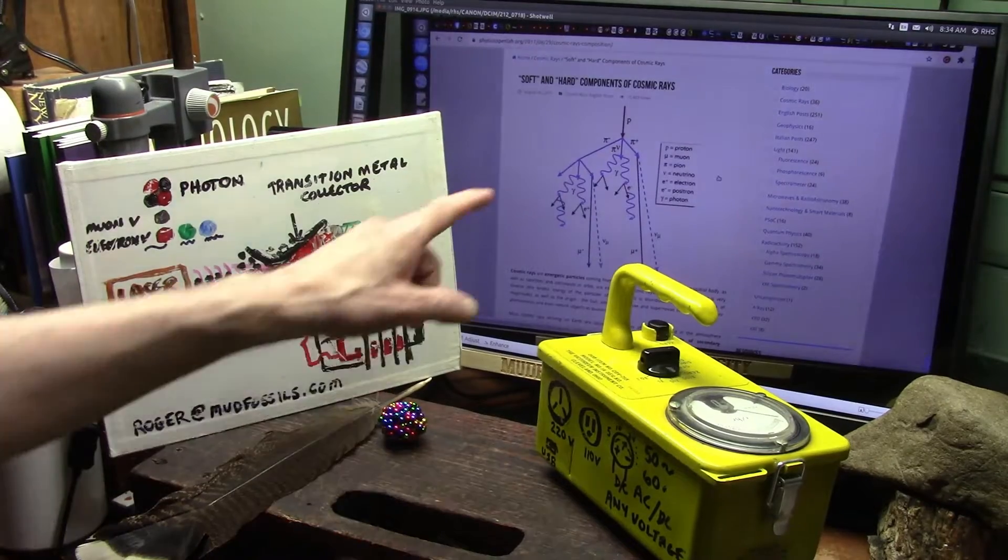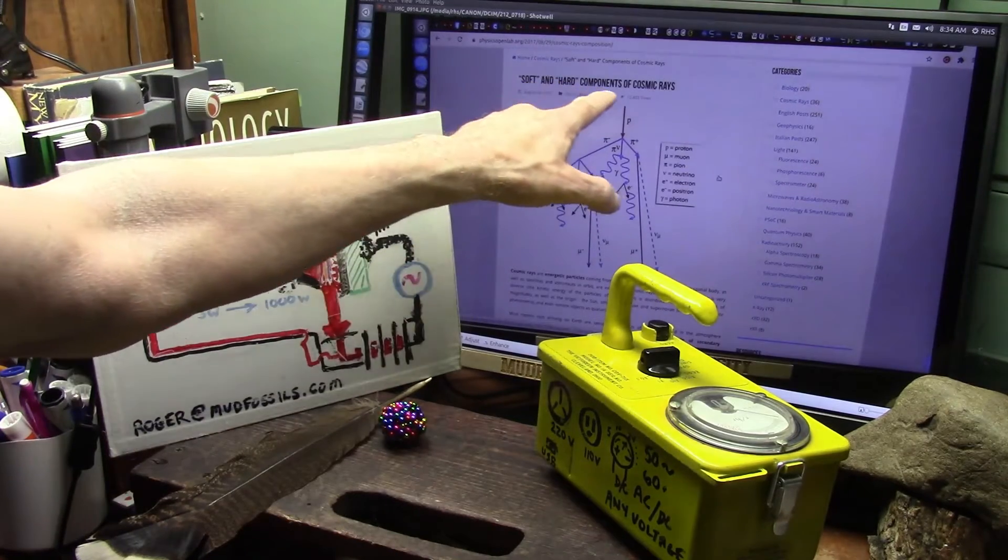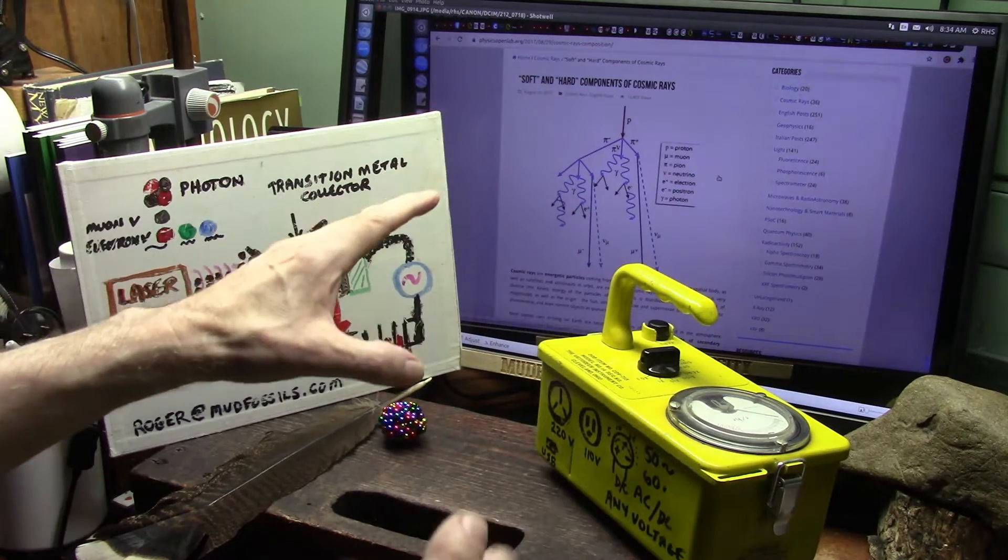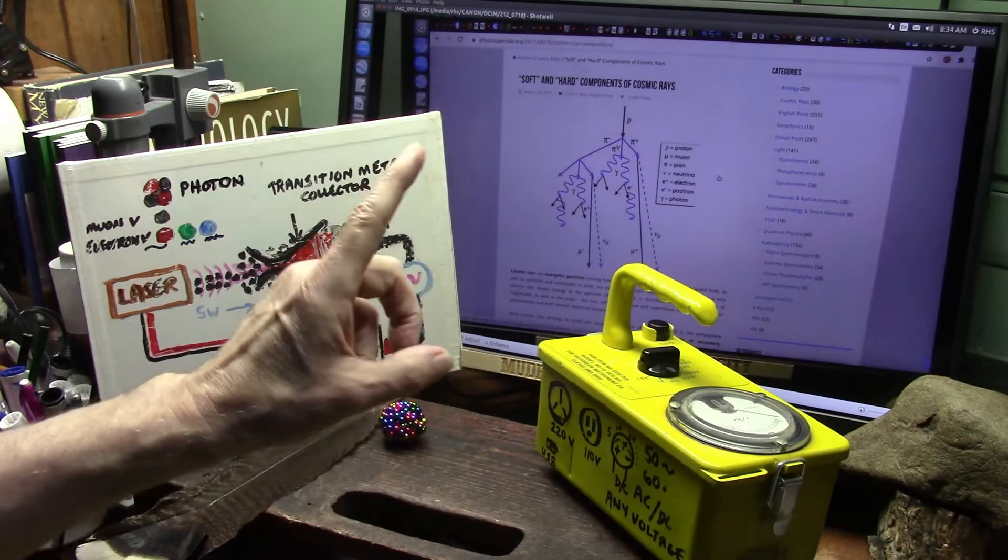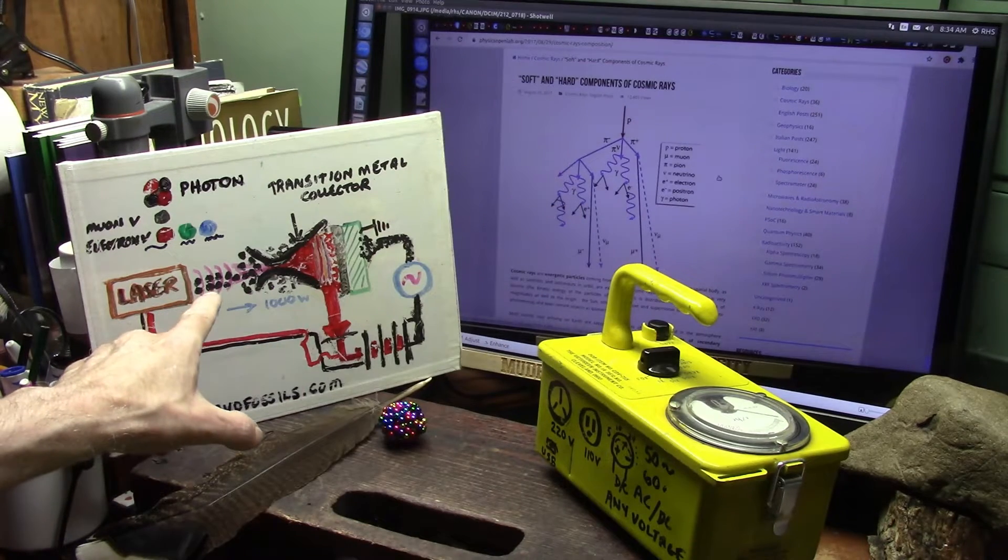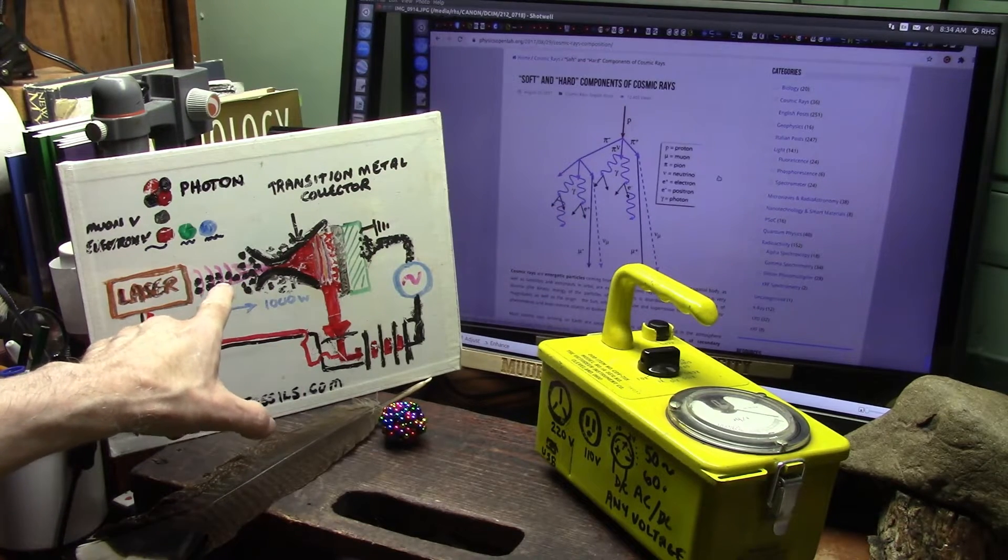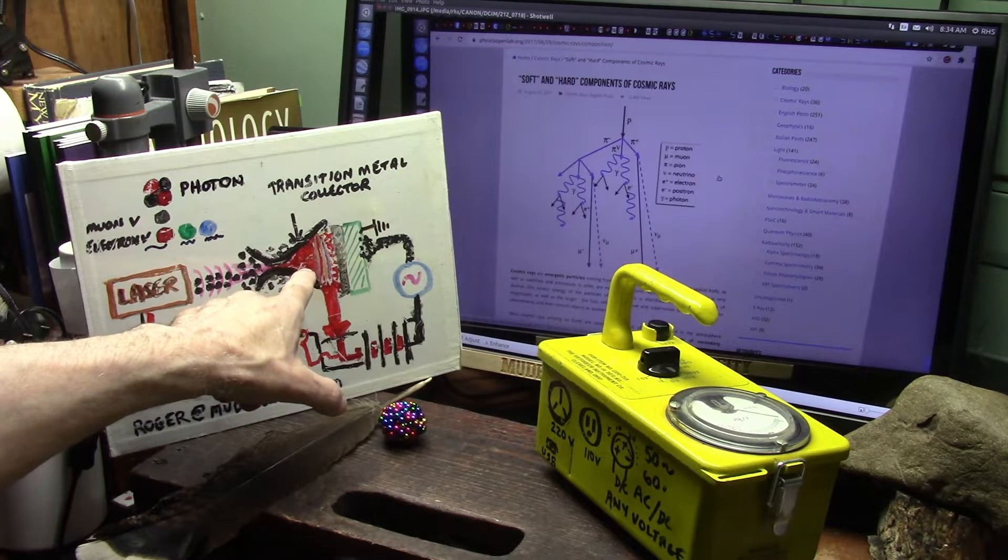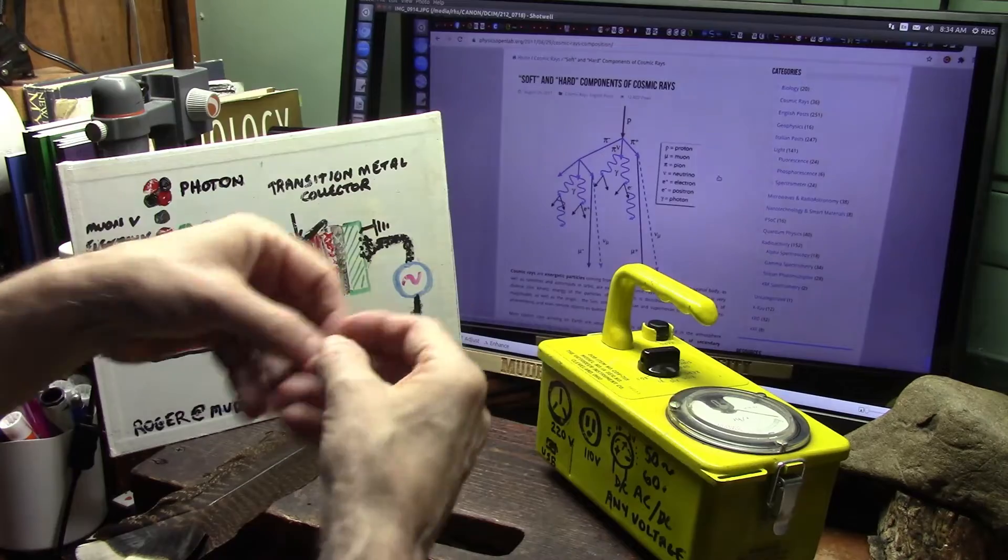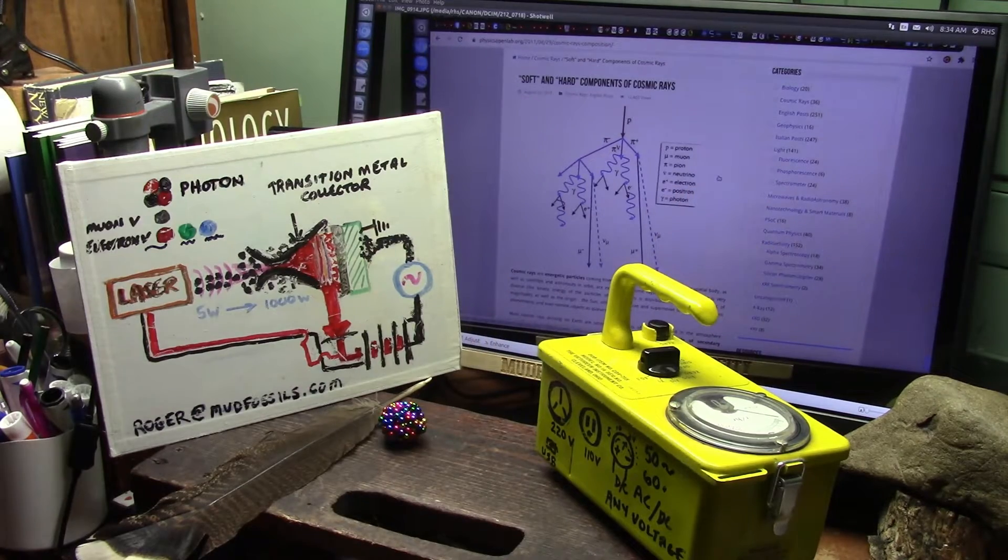All right, here it is right here. Hard and soft particles. Those are the components of cosmic rays, which are nothing more than extremely high energy particles—just exactly what we created with the light. These are the hard particles, the black ones, and these are the soft particles, the white ones, and they can squirt right through. Let's take a look at that.